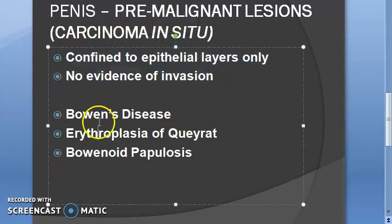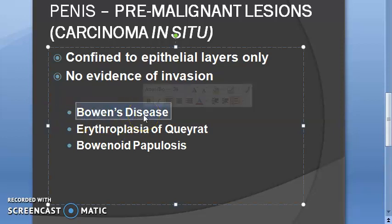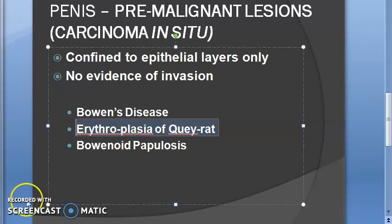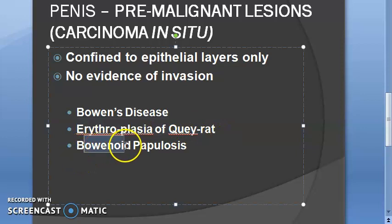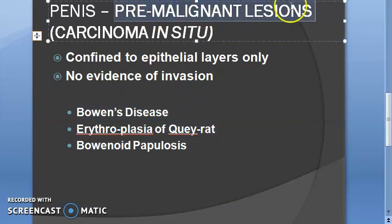For penile pre-malignant lesions, there are three examples of carcinoma in situ. You have Bowen's disease, which occurs on the shaft of the penis; erythroplasia of Queyrat; and bowenoid papillosis. All three form the pre-malignant lesions of the penis under the category of carcinoma in situ.